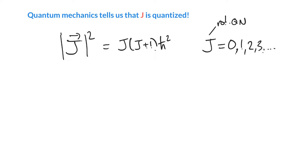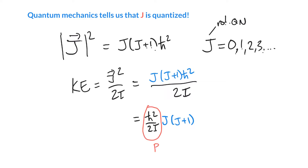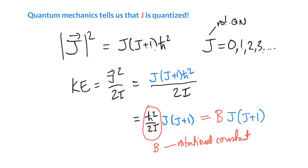We can substitute in: kinetic energy is j squared over 2I, and now we have an equation for j squared — j(j+1) h-bar squared — all divided by 2I. We can collect terms: the constant part is h-bar squared over 2I, and the variable part is the quantum number j times j plus 1. We can define a new constant B, the rotational constant, equal to h-bar squared over 2I. So the kinetic energy is B times j times j plus 1. That is the kinetic energy.